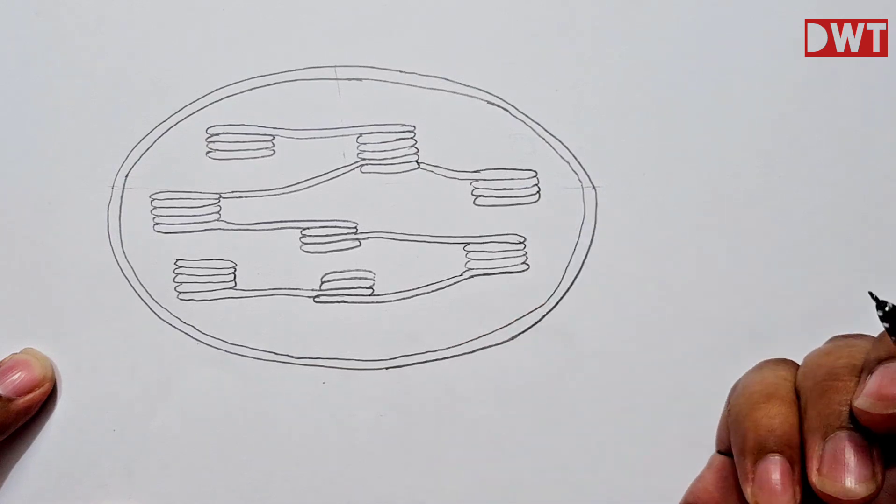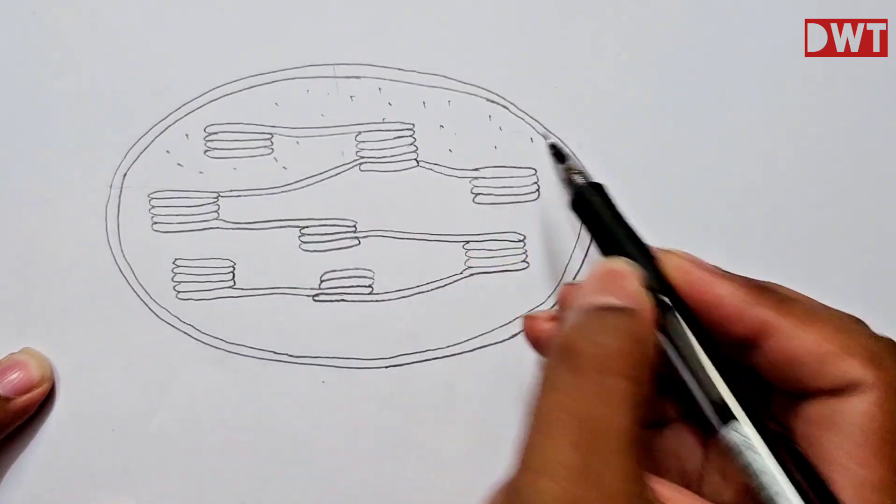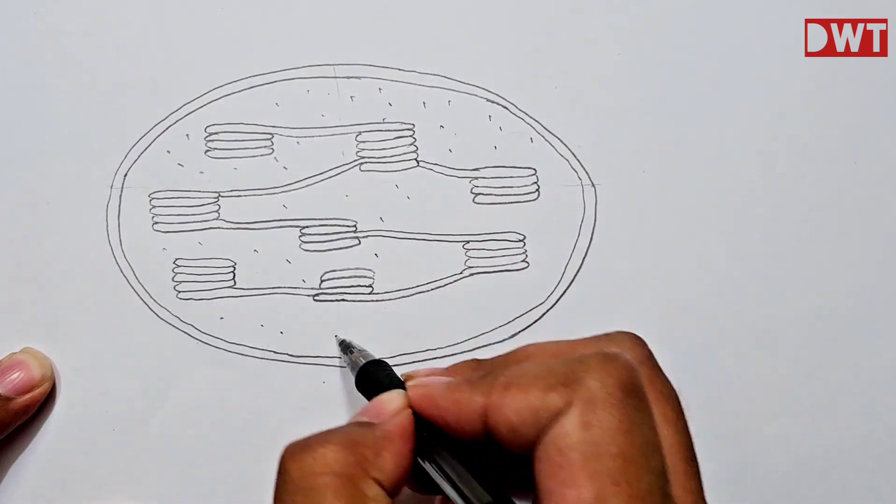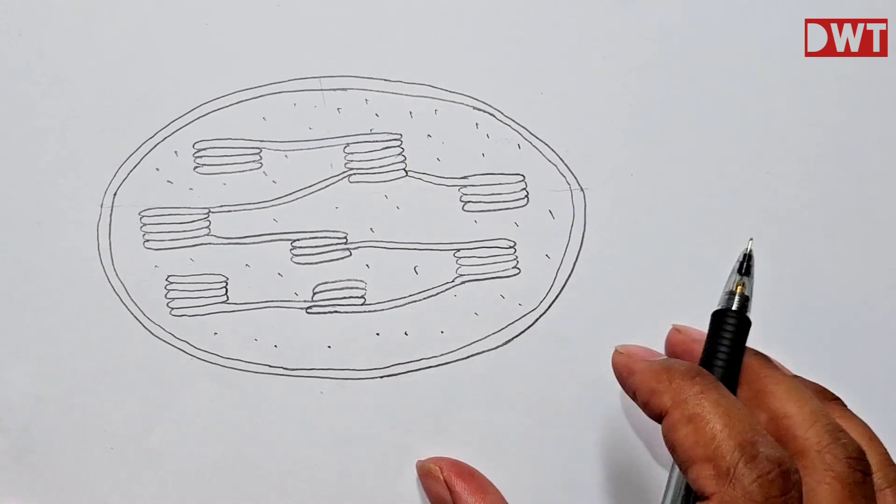So this stroma lamelli and grana discs are situated inside matrix and we have to put some dots inside the chloroplast to indicate matrix.